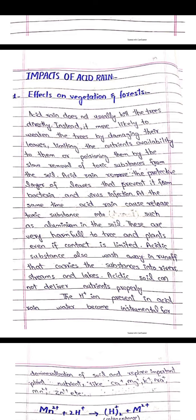The effect of acid rain on vegetation and forests: acid rain does not really kill trees directly.